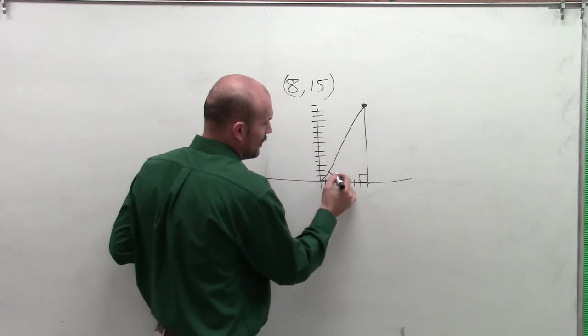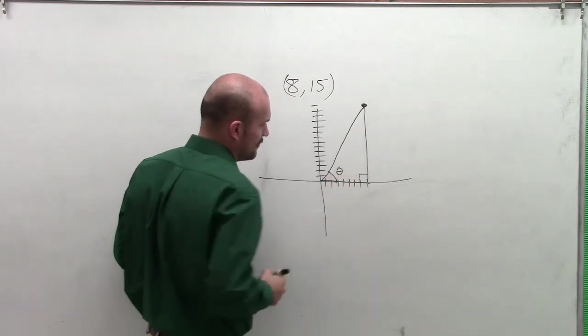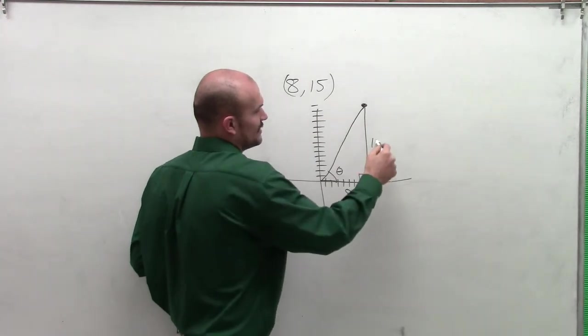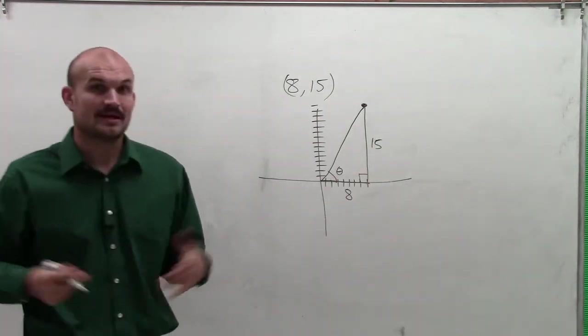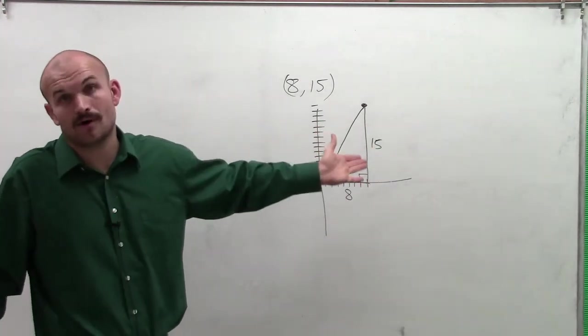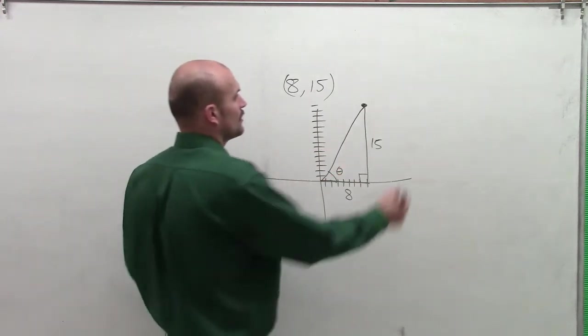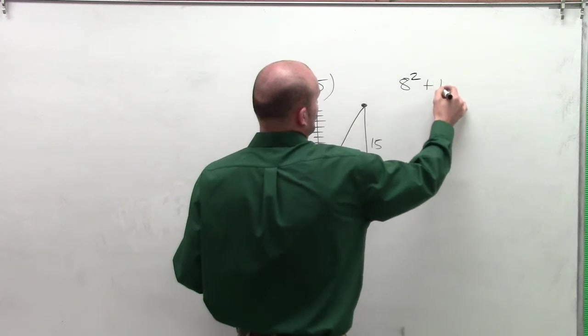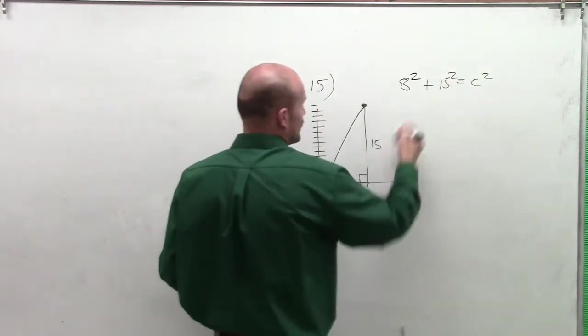Now I'll have an angle, which we'll call theta. I know the distance of this leg is 8, and the distance of this leg is 15. To find the radius, we know it's not 1, because if it was 1, I'd be on the unit circle. We're going to use Pythagorean theorem, which says your leg squared plus your other leg squared equals your hypotenuse squared.